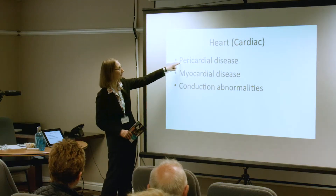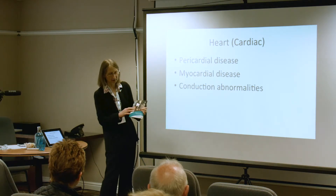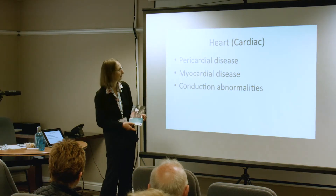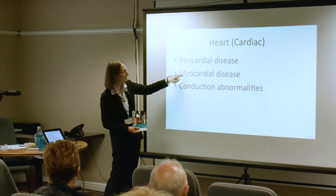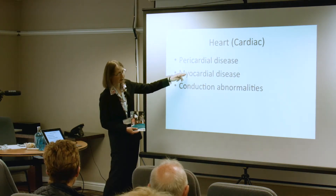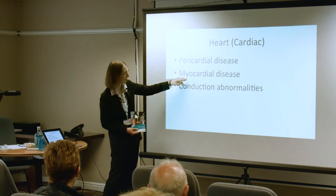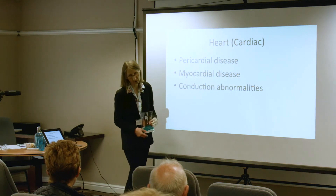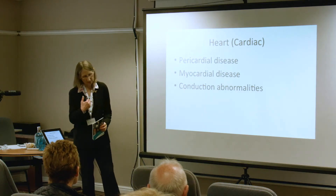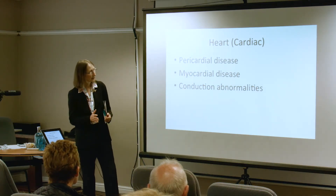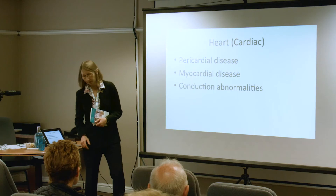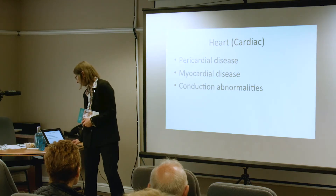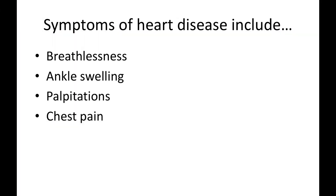There are different types of heart involvement. The pericardium is the sac that surrounds the heart, and that can become involved in scleroderma — you can get fluid in what we call the pericardial space. The myocardium is the muscle of the heart and that can sometimes become involved. You can also get what are called conduction abnormalities, because the heart has a conducting system, and it can result in the heart going either too fast or too slowly. We need to be aware of that possibility in those with scleroderma.